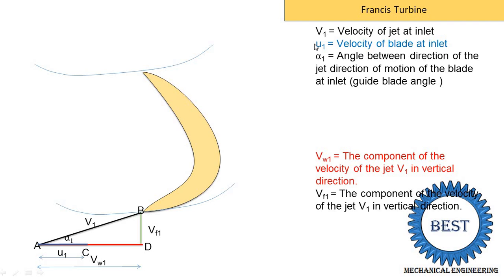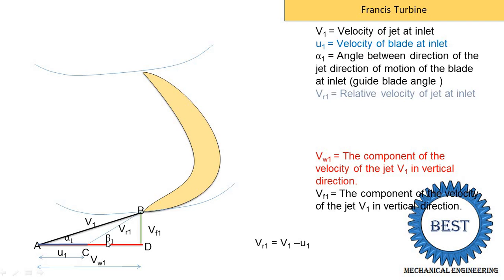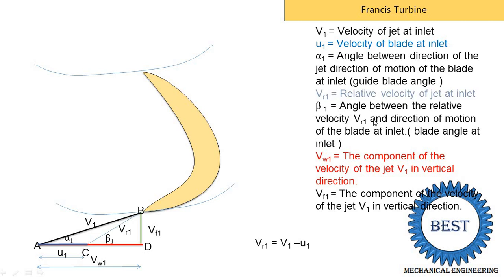We know the equation of relative velocity: relative velocity is equal to V1 minus U1. We know that V1 ends at point B and U1 ends at point C. We simply connect line B and C, and it represents the relative velocity Vr1 — the relative velocity of the jet at the inlet. The angle of relative velocity with the x-direction is indicated as beta 1, which is the angle between the relative velocity Vr1 and the direction of motion of the blade at the inlet, also known as the blade angle at inlet. This is the complete inlet velocity triangle.